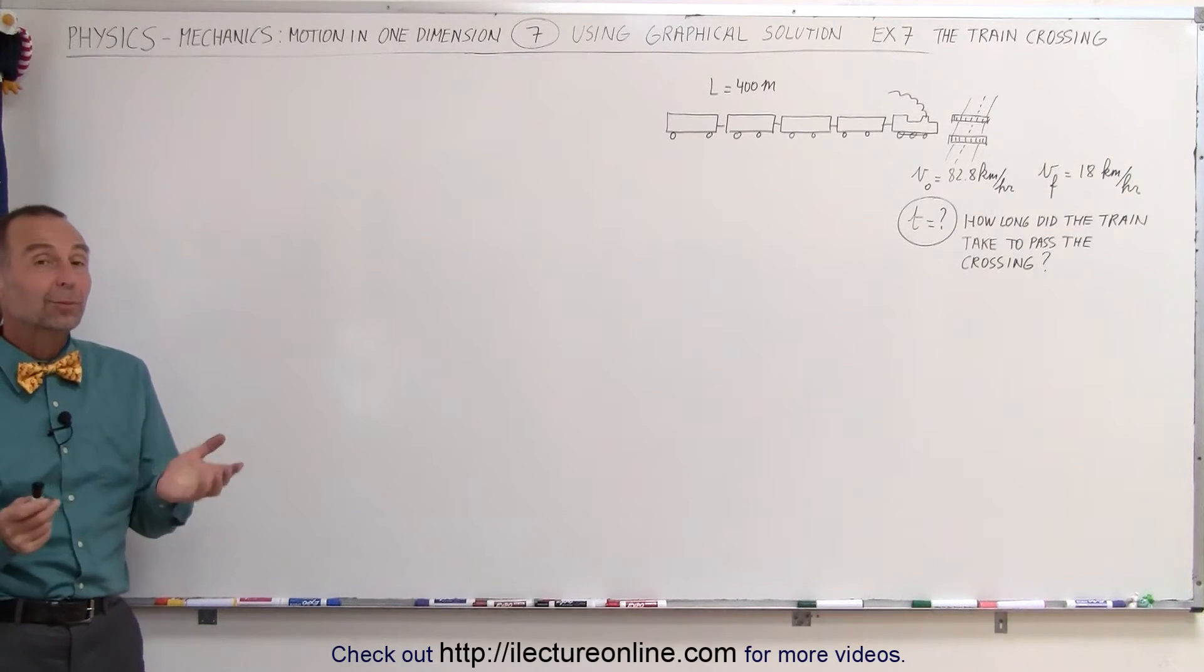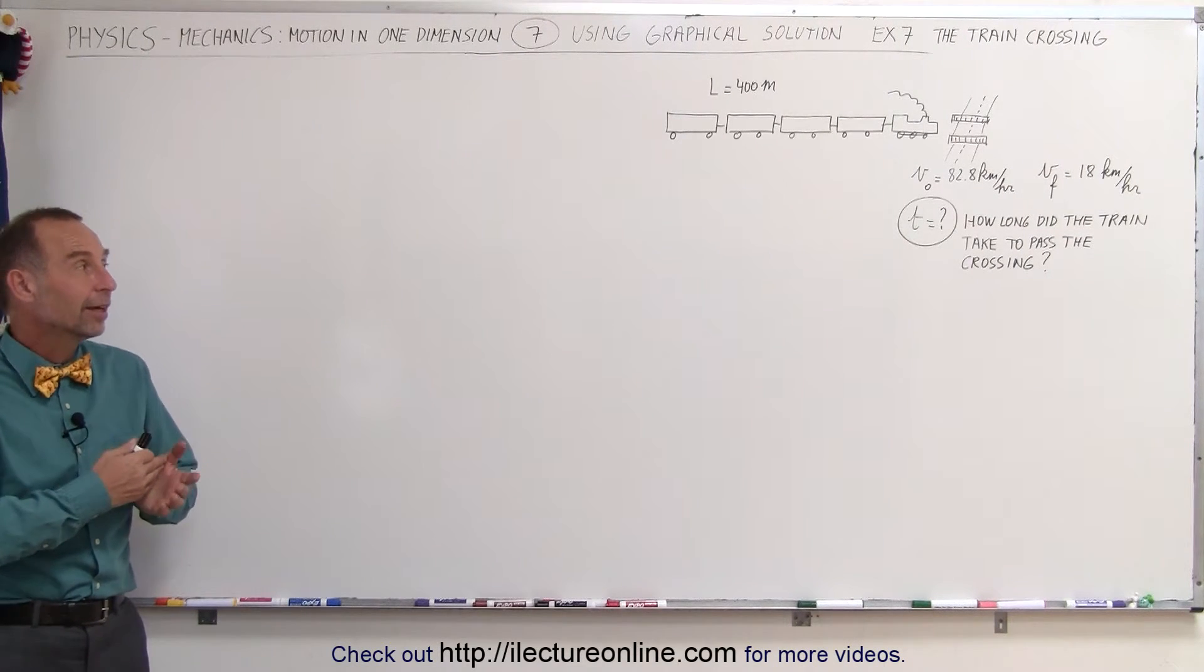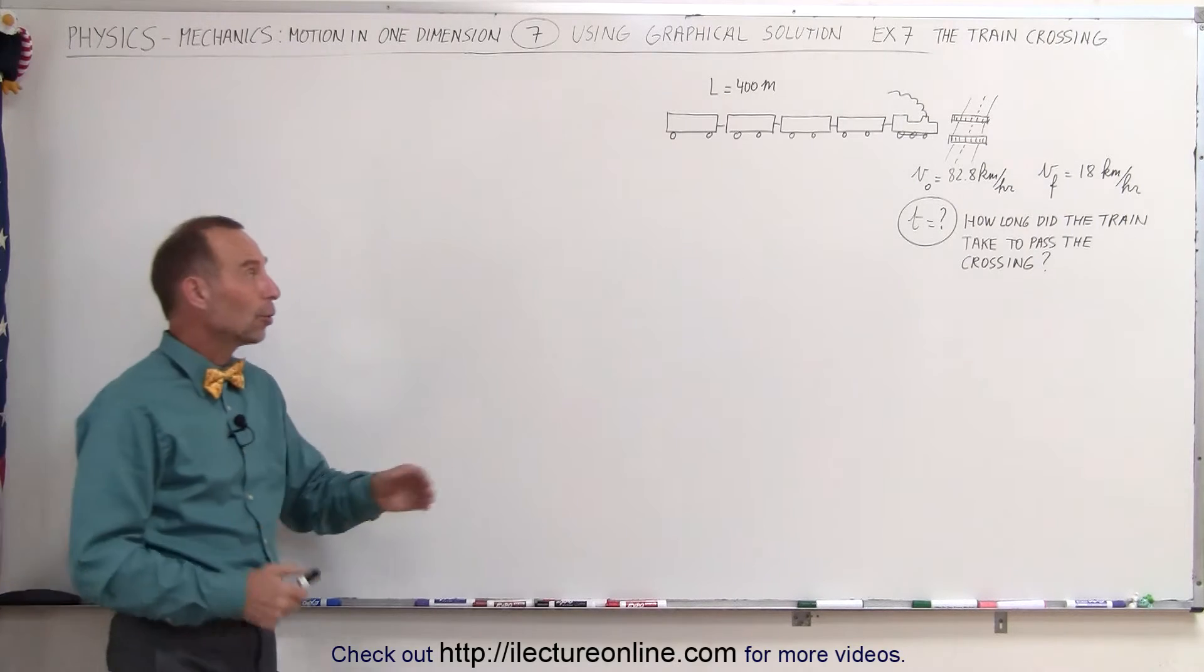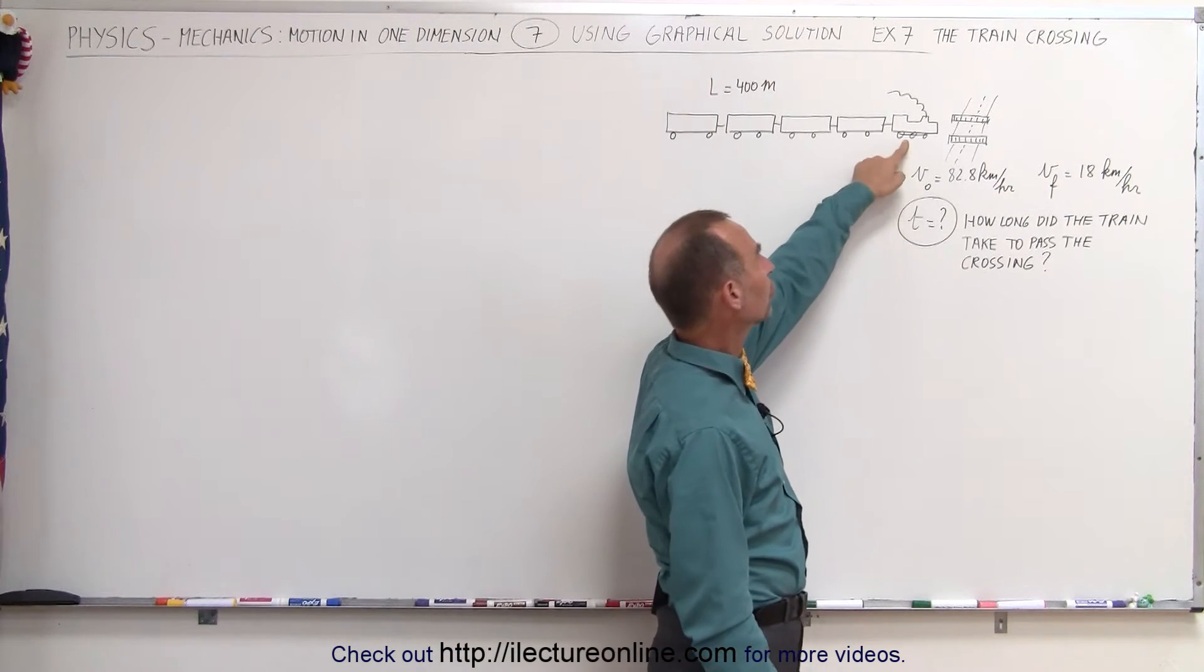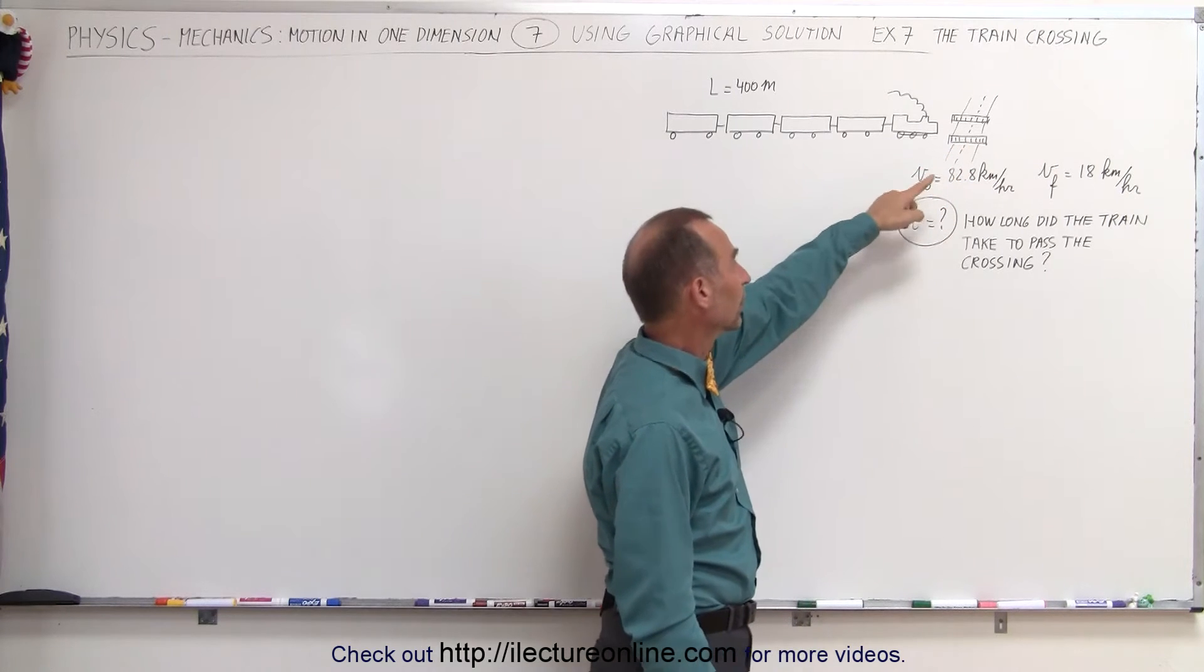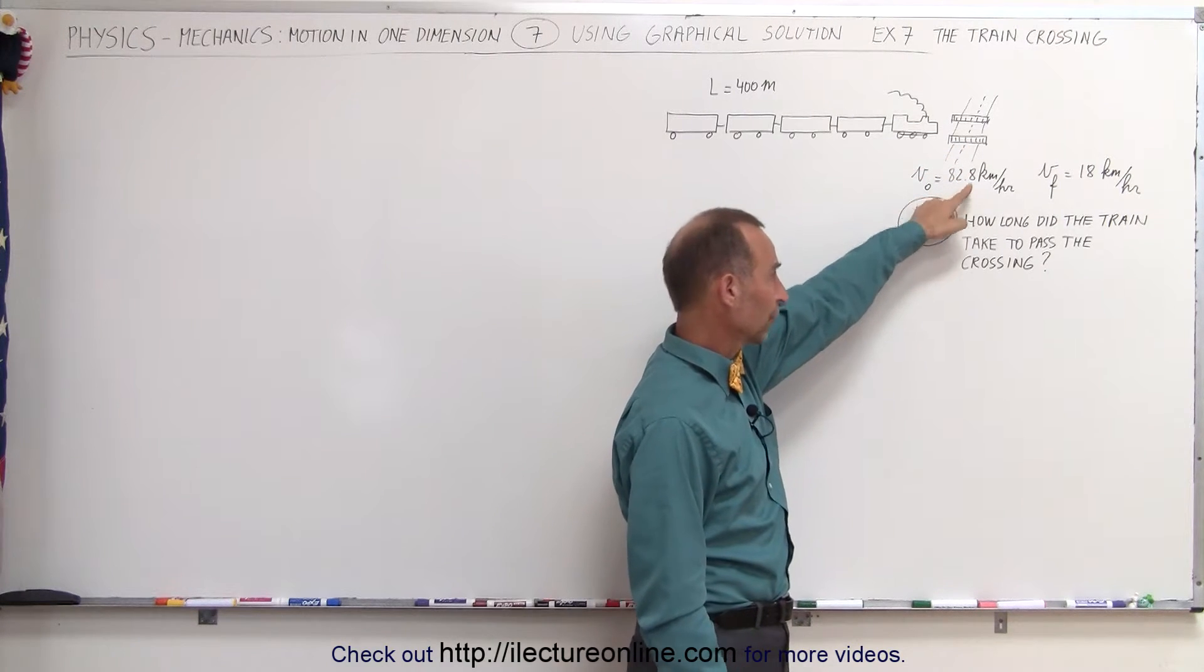Welcome to Electron Line. Our next problem is a train crossing a railroad crossing. Notice that the length of the train is 400 meters.